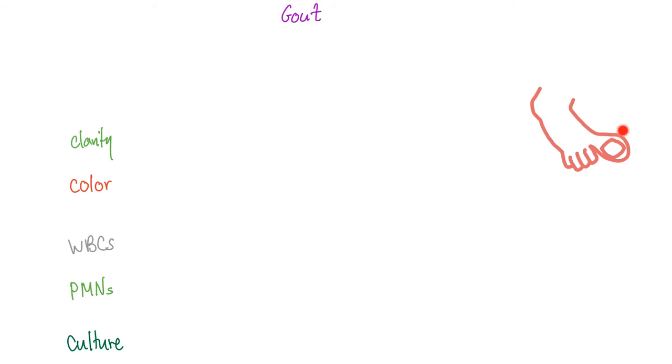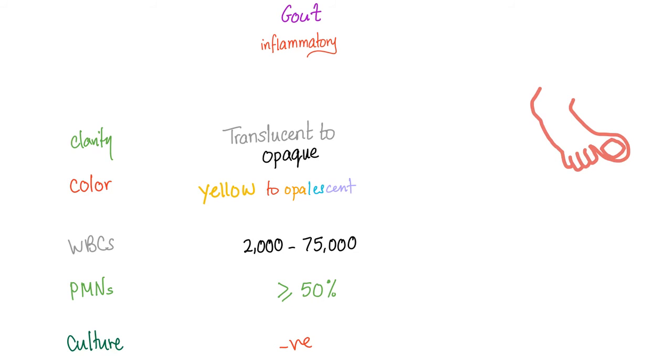Now let's talk about gout, baby. I mean, look at this big toe. Big toe, but doctors don't say big toe. They say first metatarsal joints because doctors are super sophisticated to the point of being stupid. Anyways, gout again. Pause. Here are the answers. It's exactly the same as rheumatoid arthritis. Clarity, translucent to opaque, which is not normal. Color. Yellow to opalescent, which is not normal. White blood cells, 2,000 to 75,000, which is not normal because the normal was less than 200. PMNs, more than or equal 50%, and the culture is negative. Let me ask you a question. How about microscopic examination in cases of gout? Would you expect negative birefringence or positive birefringence? And the answer is negative birefringence. Can you describe the shape of the crystals? Yes, they are needle-like.